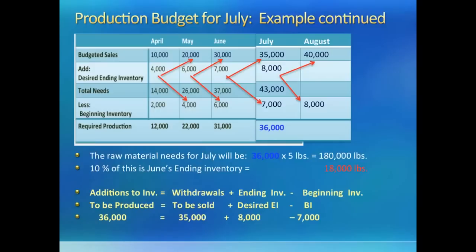Compare the steps in the table to the familiar formula: what we need to add to the account is equal to what we will take out, plus what we need for next month, minus what we already have in beginning inventory. Whichever method works for you is fine — just keep a clear head about the numbers.